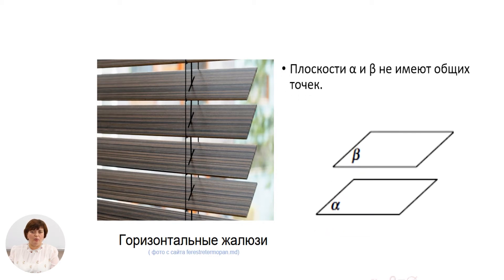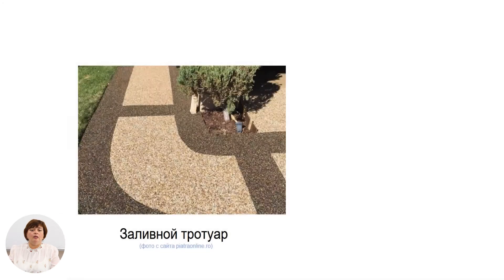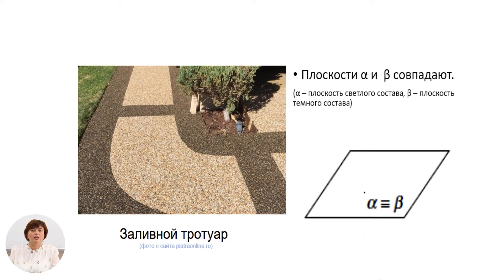Плоскости α и β не имеют общих точек – это второй случай взаимного расположения двух плоскостей. Обозначаем: α ∩ β равно пустому множеству. На следующей картинке у нас заливной тротуар, на котором можно выделить тёмный и светлый цвет. Обозначим плоскостью α плоскость светлого цвета, плоскостью β – плоскость тёмного цвета. Плоскости α и β совпадают, и мы обозначаем: α совпадает с β.